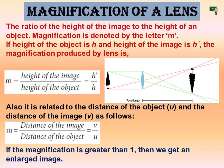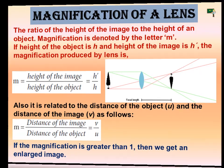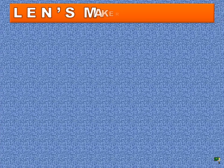If the magnification is greater than 1, then we get an enlarged image. Now let's see the important formula: lens maker's formula.